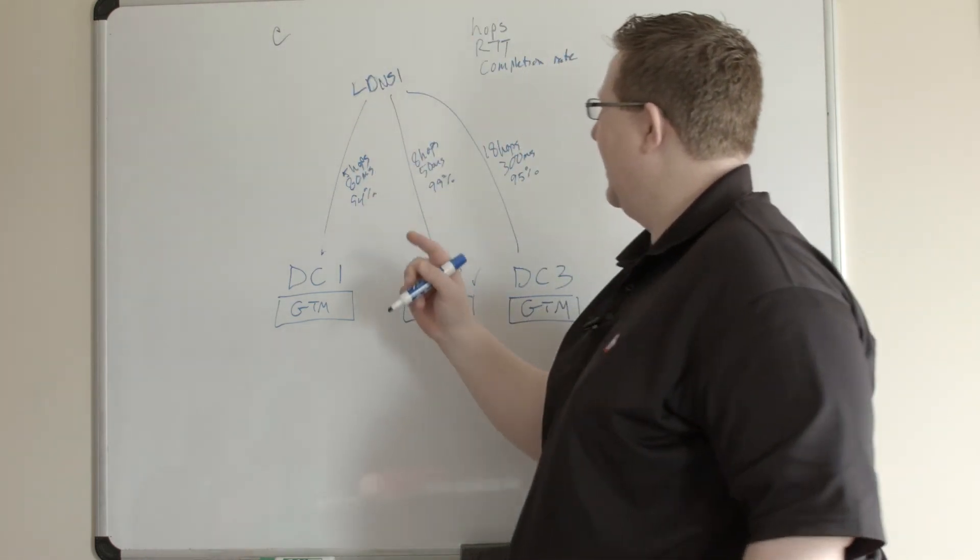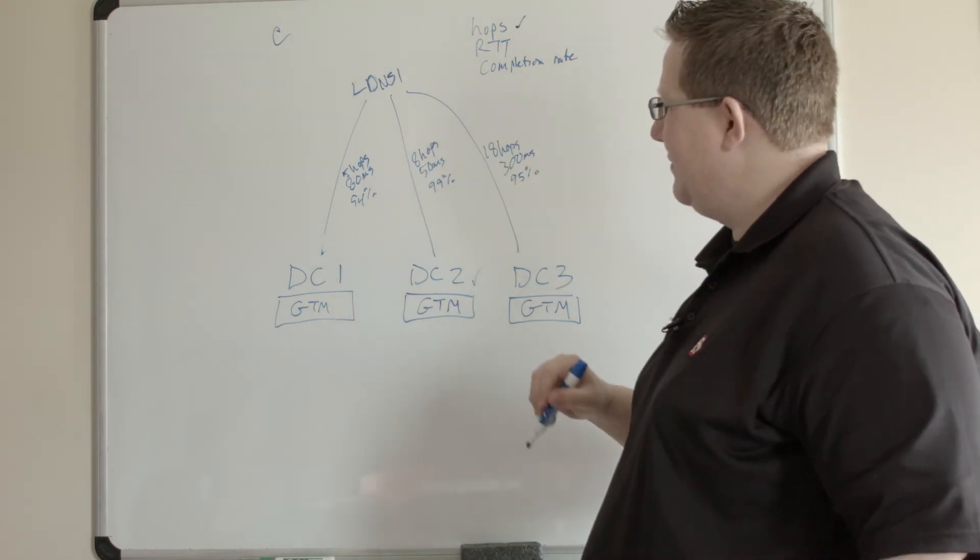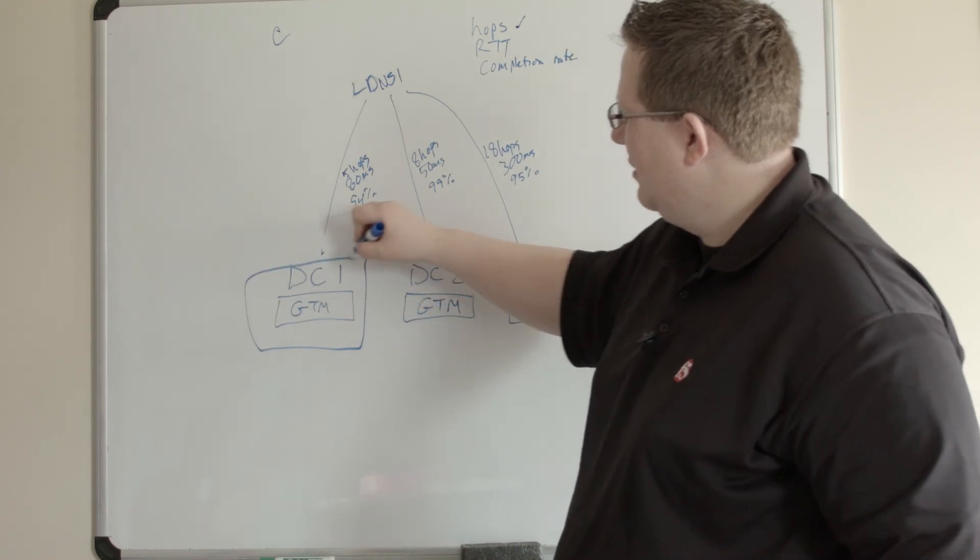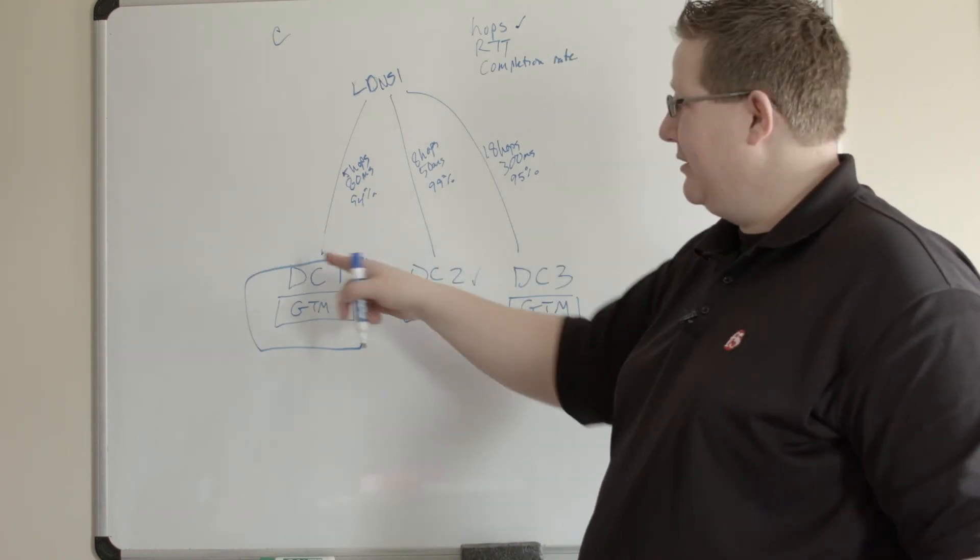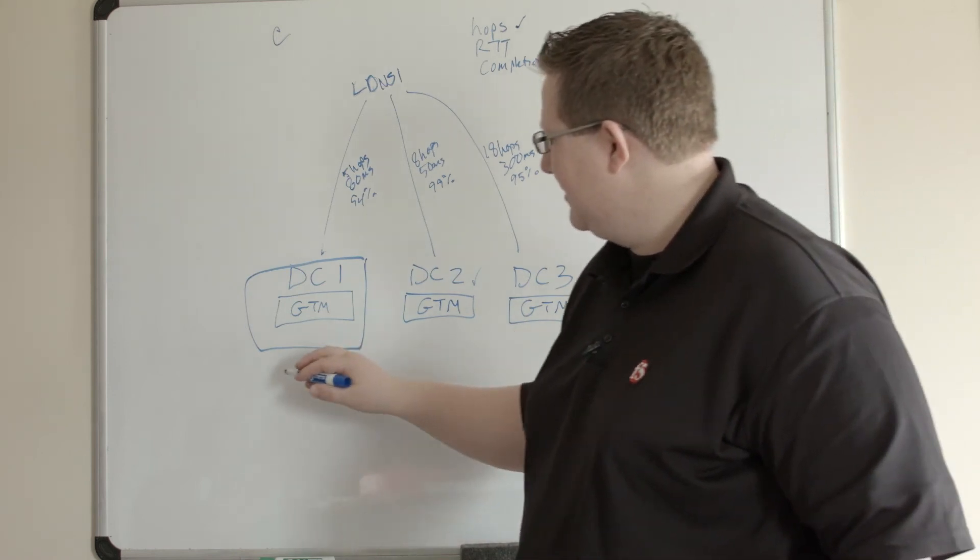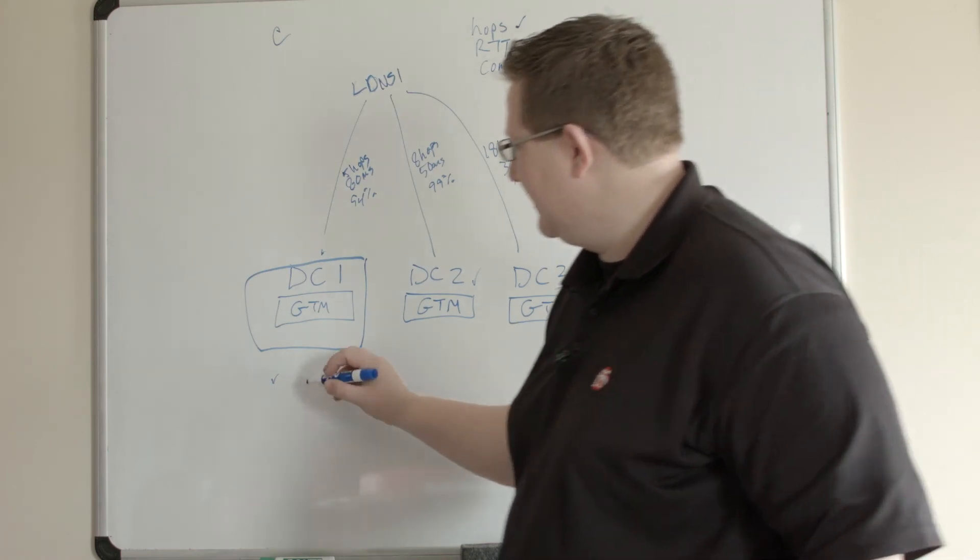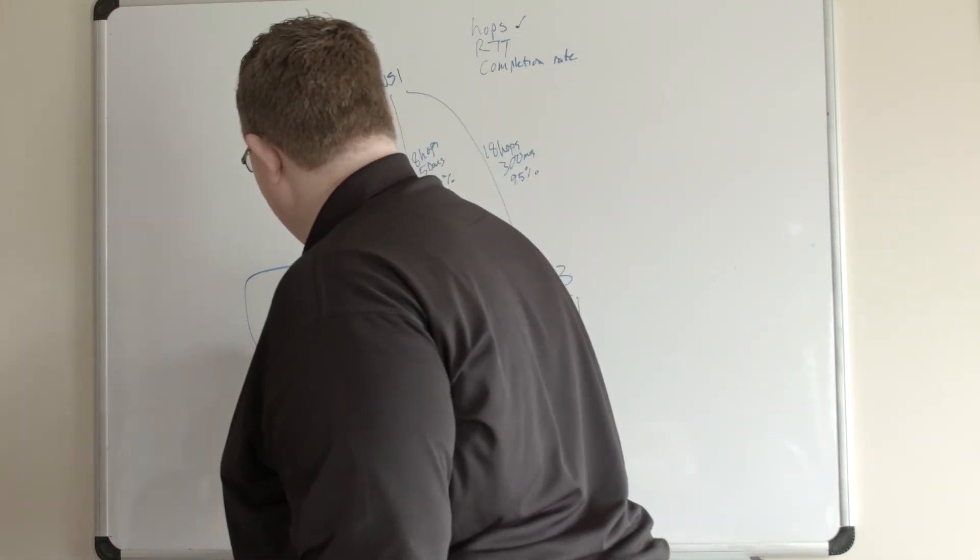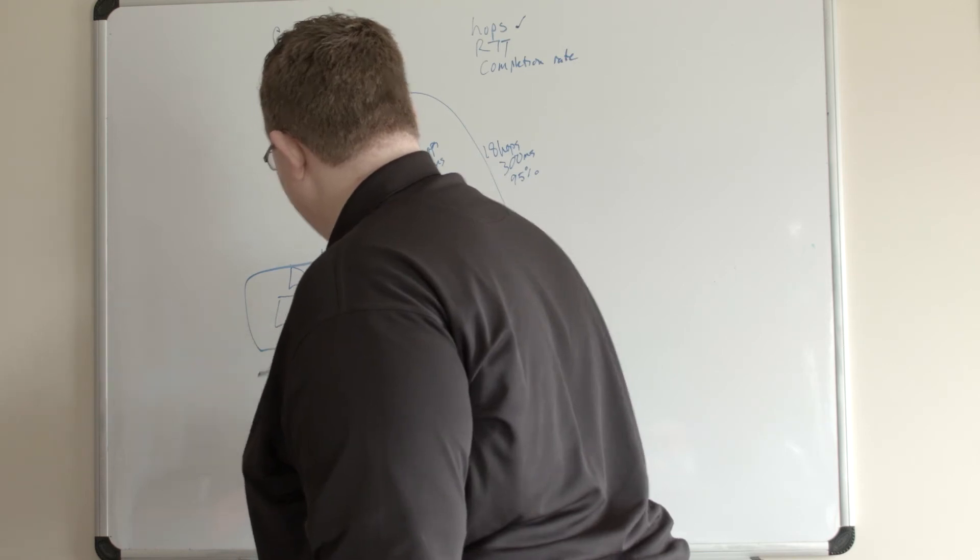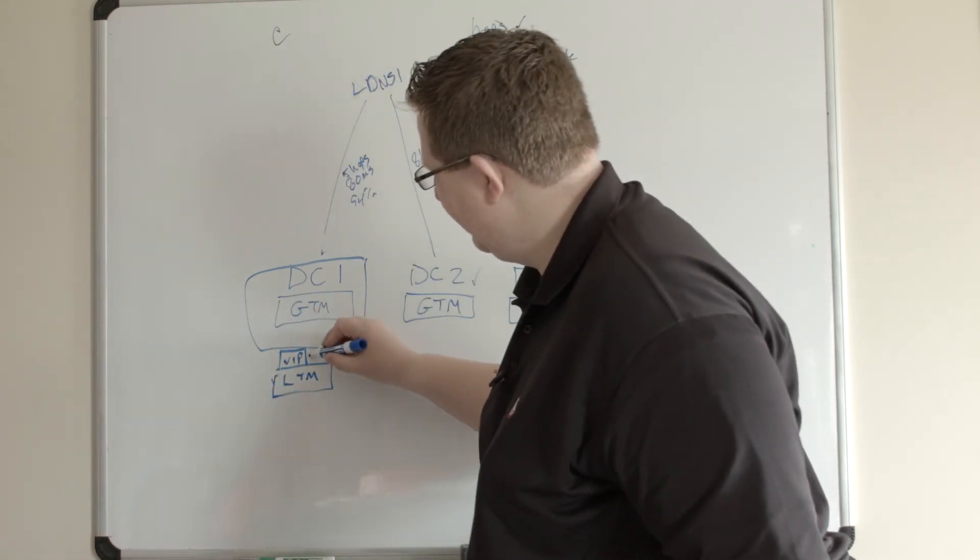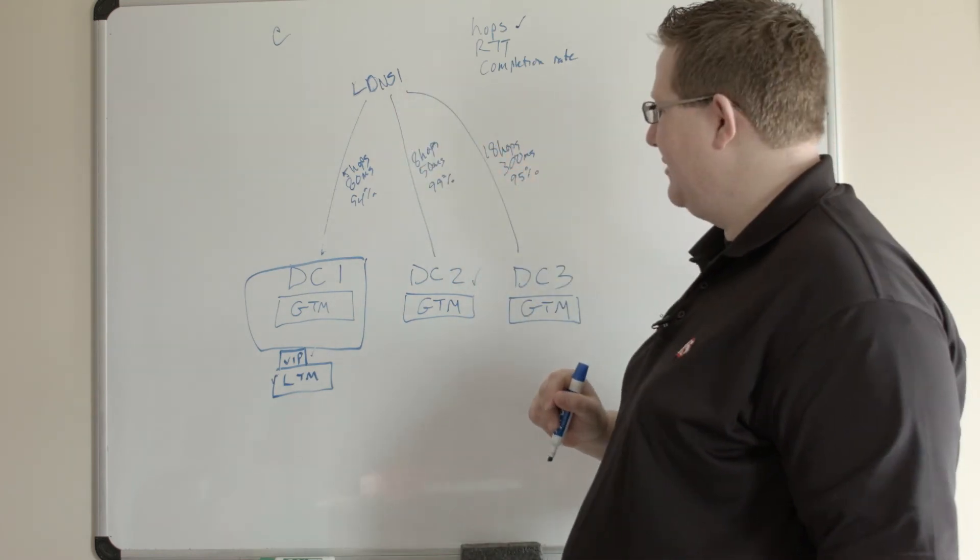It's going to select, in this case, if I'm hops, and I'm only 5 hops away from this LDNS, I'm going to choose this data center, which has a VIP in here somewhere. And that's going to be this VIP down here on this LTM. And that's the one that gets selected, which is all well and good from the LDNS if the LDNS was going to be the one connecting to that application.